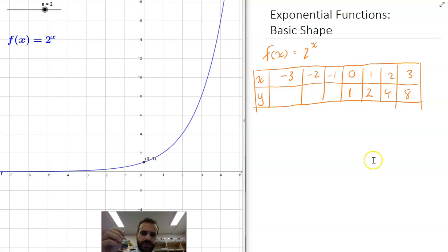Now take a look at what happens as I move the other way. 2 to the negative 1 is the same as 1 over 2 to the 1, which is 1 over 2, which is one half. 2 to the negative 2 is the same as 1 over 2 squared, which is 1 quarter.